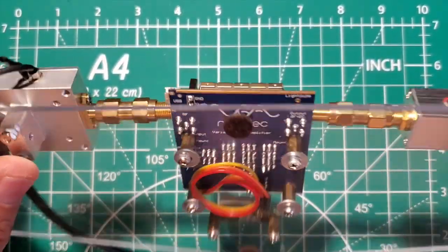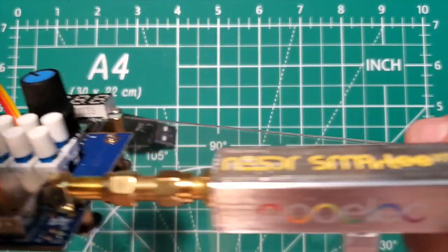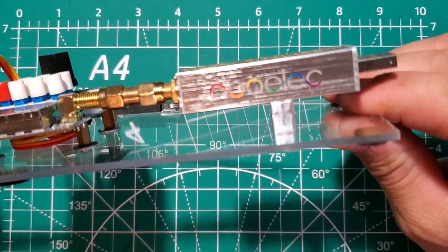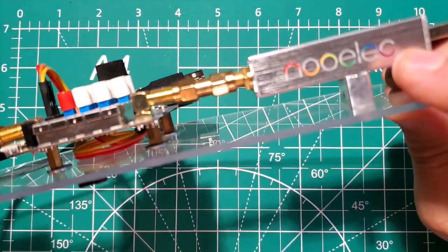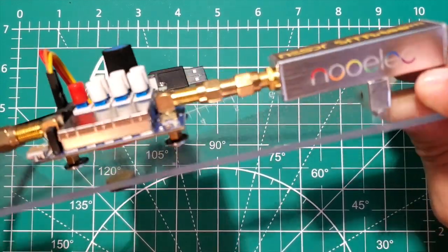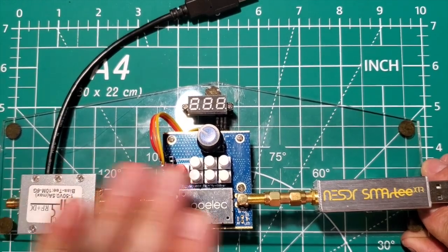And I have these mounted here with these little standoffs. These are just super glued, and that one there has a little bit of double-sided tape to bring it up a little bit. They kind of make it go straight across.